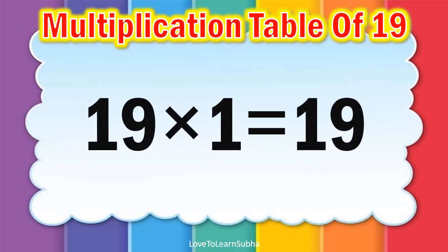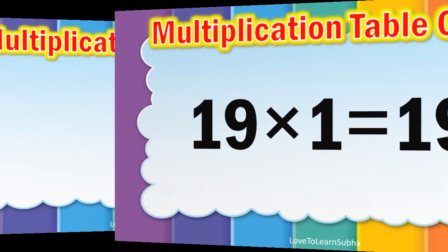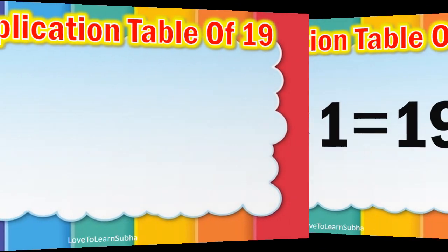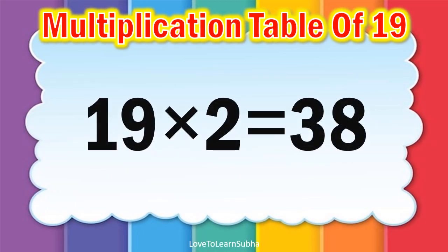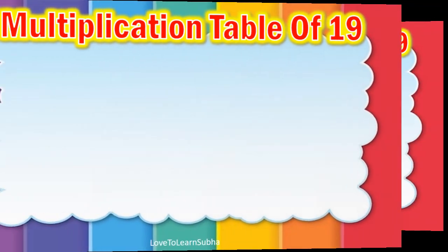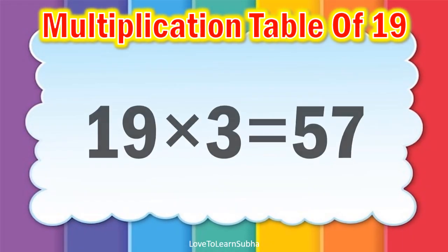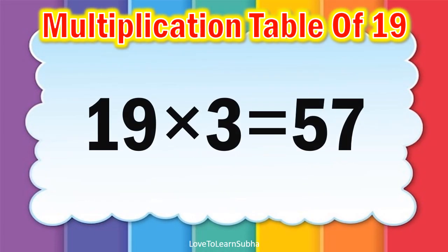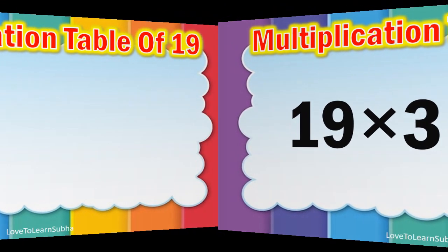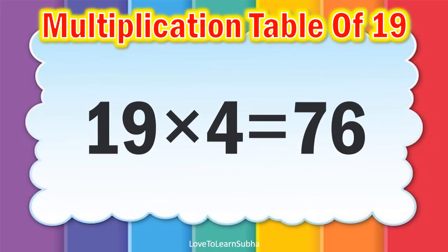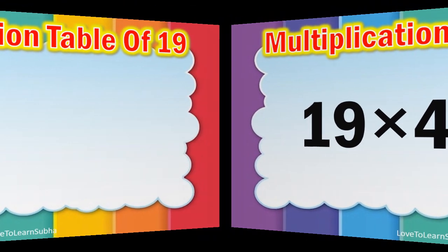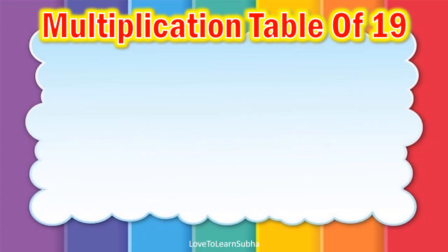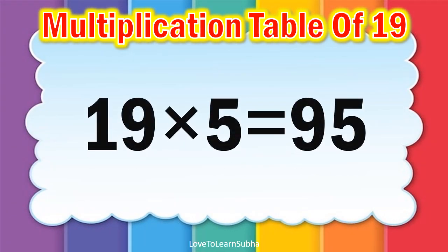Nineteen ones are nineteen. Nineteen twos are thirty-eight. Nineteen threes are fifty-seven. Nineteen fours are seventy-six. Nineteen fives are ninety-five.